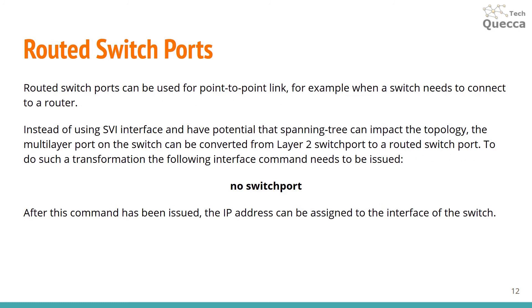Routed switch ports can be used for point-to-point links, for example when a switch needs to connect to a router. Instead of using an SVI — where spanning tree could potentially impact the topology — a multilayer switch port can be converted from a layer 2 switch port to a routed switch port using the interface command: no switchport. After that, an IP address can be configured on the port and used as a routed switch port.